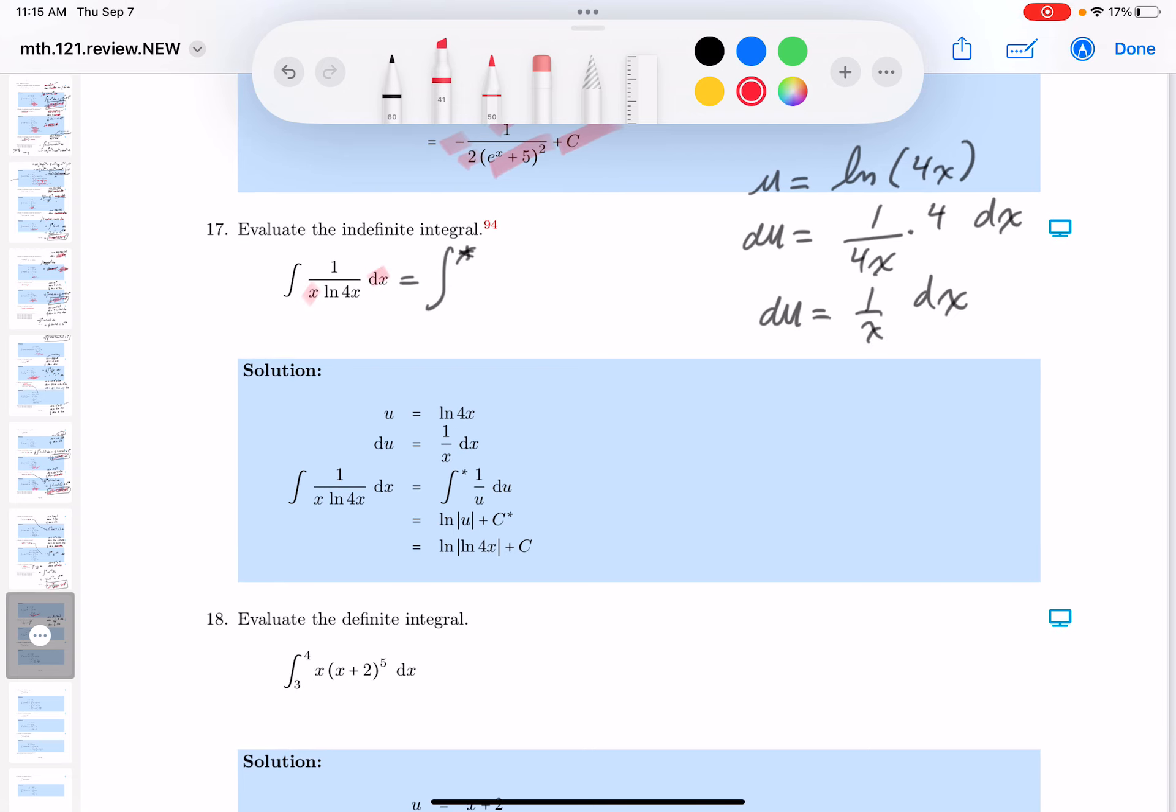So the first thing I notice, I do see the 1 over x dx, and that's just a du. That's all that is. And then I get 1 over the natural log of 4x, and that would just be 1 over u.